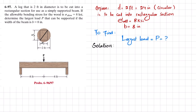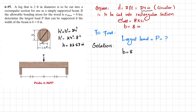This is the breadth and this is the height. By using the Pythagorean theorem, h² + b² equals the diameter squared. The diameter is 24 inches (2 feet converted to inches). So h² equals 24² minus 8², and when you solve this you get h equal to 22.63 inches. Now you have breadth equal to 8 inches and height equal to 22.63 inches.